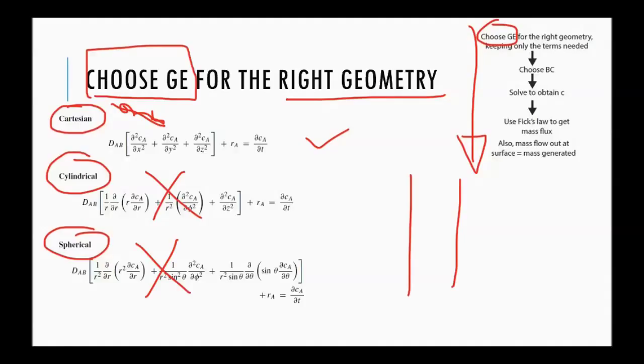Now, we need to look at all the different terms. So, this is the transient term. We definitely don't need this because it's a steady state problem. Then, reaction term, we do need this. We do need the reaction term. Then, we have only one dimension. So we do not need y and z.